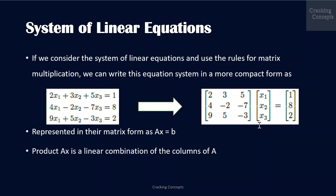If we consider a system of linear equations as shown here and use the rules of matrix multiplication on it, we can write it into a more compact form. Note that x1 will scale the first column, x2 the second, and x3 the last. Generally, a system of linear equations can be compactly represented in matrix form as Ax = b, and the product Ax is a linear combination of columns of A.